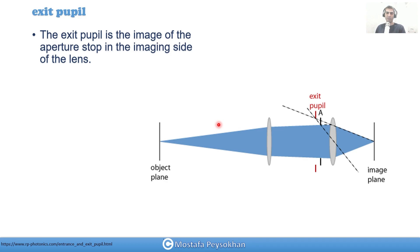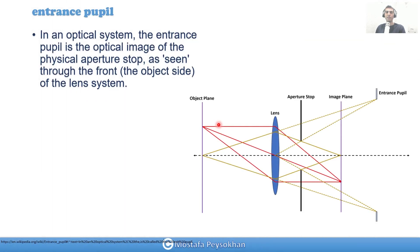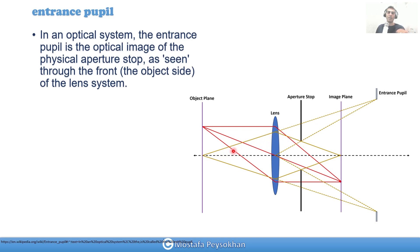Now we have another concept called the entrance pupil. Here we have the object plane, a lens, and the aperture stop. You image the aperture stop — which limits the marginal rays that can pass through your optical system — through all optical elements onto the object side. The image of the aperture stop into your object plane is the entrance pupil. It may not be a real image, but that's the entrance pupil of the optical system.